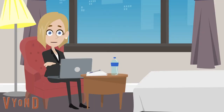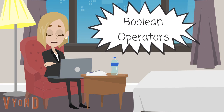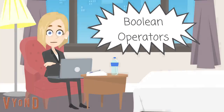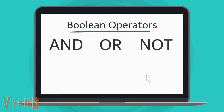Since one term can mean different things, your search can be either widened or narrowed with the help of Boolean operators. The Boolean operators of and, or, or not can be used and completely change your search.